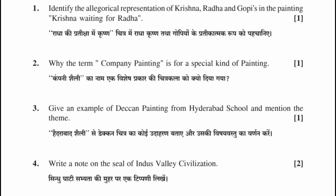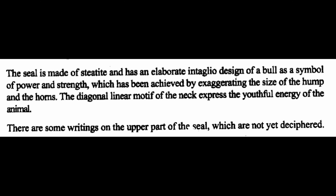Question 4: Write a note on the seal of Indus Valley Civilization. The seal is made of steatite and has an elaborate intaglio design of a bull as a symbol of power and strength, which has been achieved by exaggerating the size of the hump and the horns. The diagonal linear motif of the neck expresses the youthful energy of the animal. There are some writings on the upper part of the seal which are not yet deciphered.